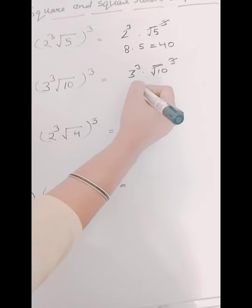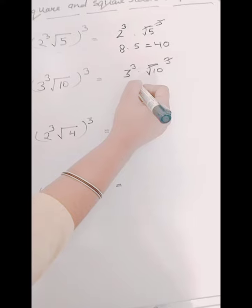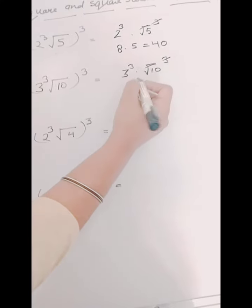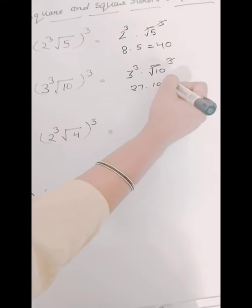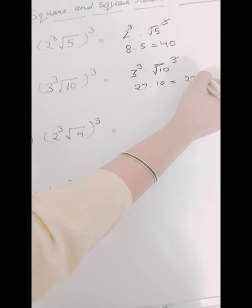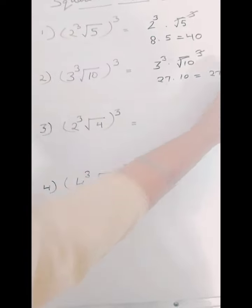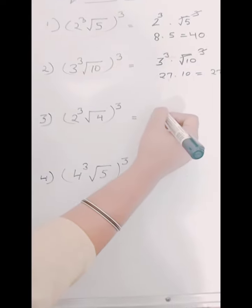So we will get here 27 multiplied by 10 which is equal to 270. So the answer is 270.